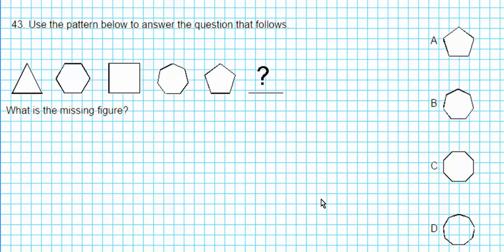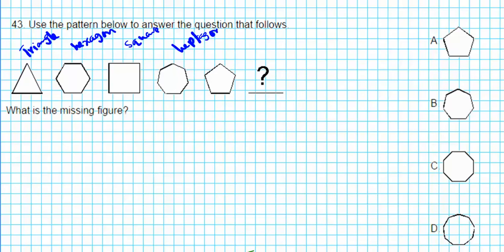Let's take a look at question 43. It says, use the pattern below to answer the question that follows. So we have a triangle, a hexagon, a square, a heptagon, a pentagon, and a missing shape. The question is: what is the missing figure? Let's go ahead and write down the number of sides in each shape and see if we can determine a pattern.